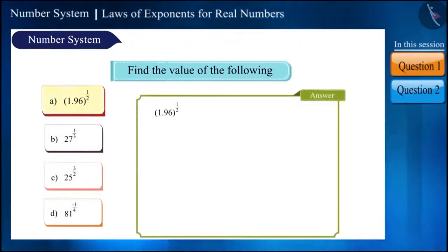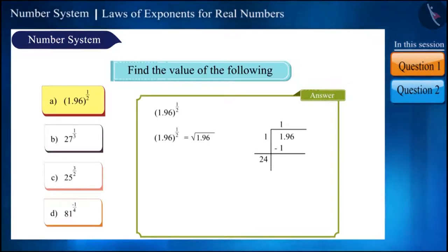The first option, 1.96 to the power 1/2, means we have to find the square root of 1.96. In the previous class, we learned to find the square root of decimal numbers. We will solve it this way. Its square root is 1.4.